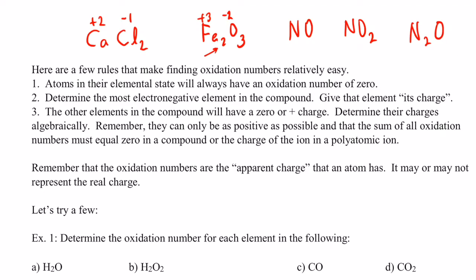Here are a few rules that will make finding oxidation numbers relatively easy. Rule number one: atoms in their elemental state will always have an oxidation number of zero. So iron metal, gold metal, fluorine gas F2, and helium would all have oxidation numbers of zero when in their elemental state — they're not sharing electrons with anything else.